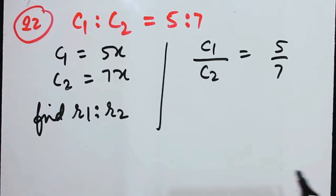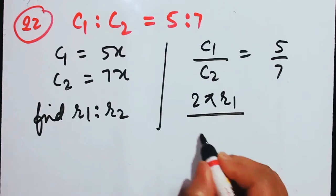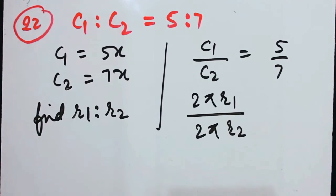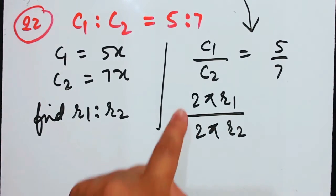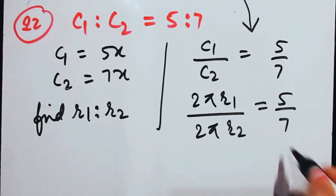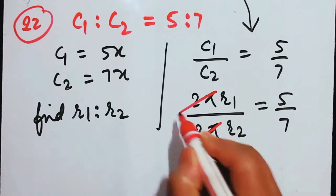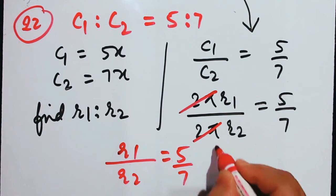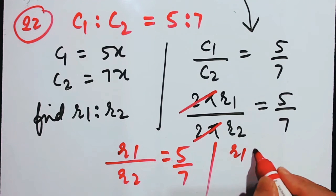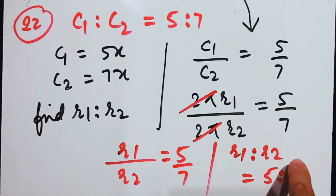Since C1 equals 2πR1 and C2 equals 2πR2, placing these in gives 2πR1 over 2πR2 equals 5 by 7. The 2π cancels and you get R1 by R2 equals 5 by 7. So the answer is R1 is to R2 equals 5 is to 7.